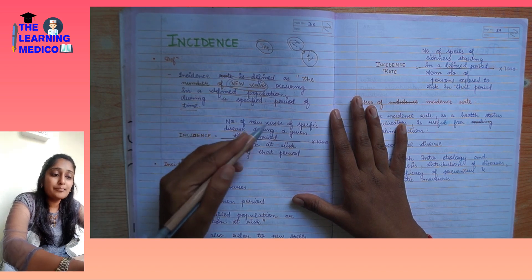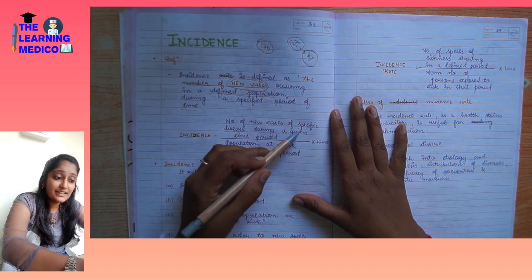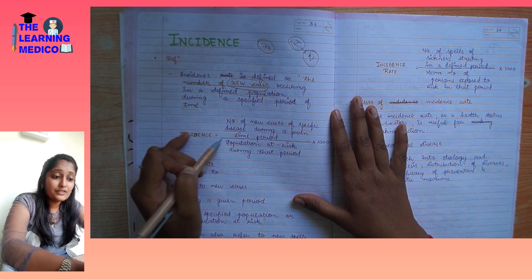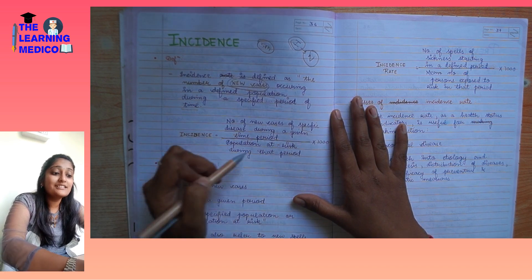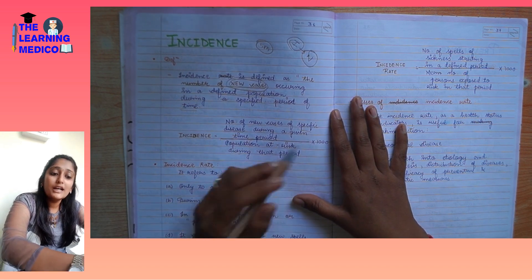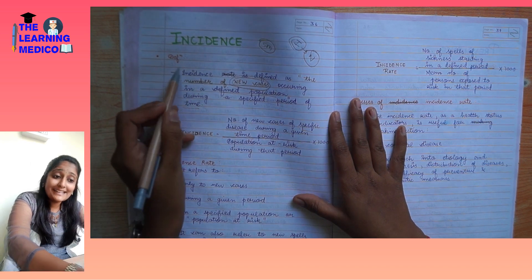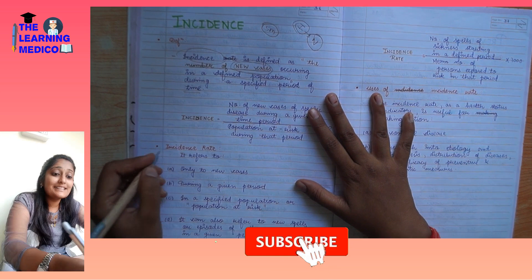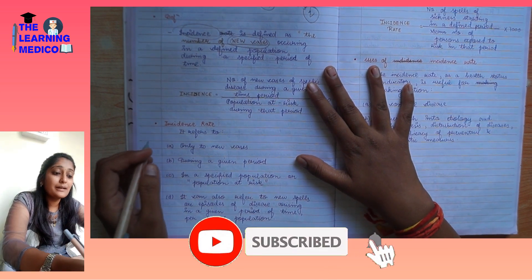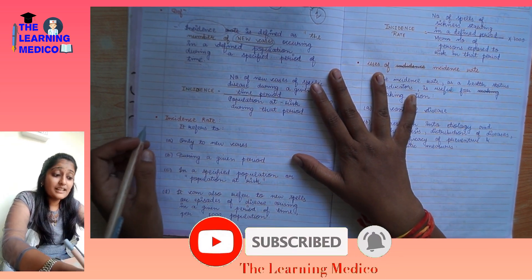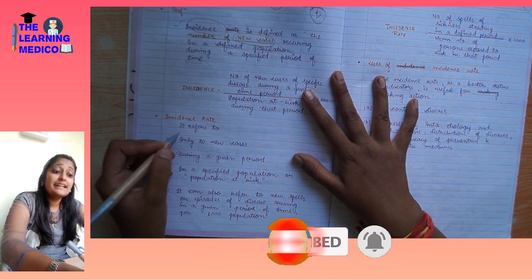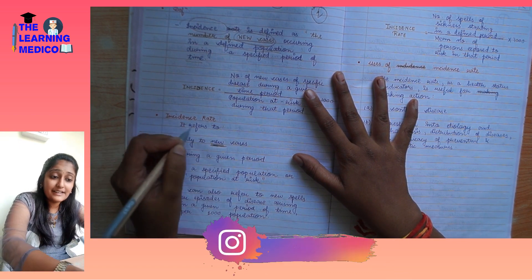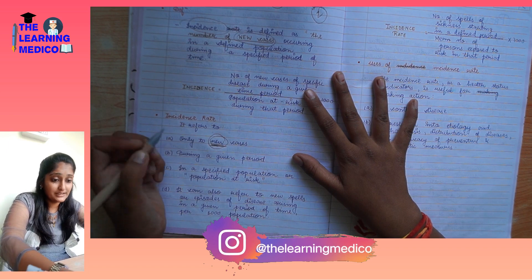How do we count the incidence? Number of new cases of a specific disease during a given period of time, upon population at risk during that period, into 1000. Incidence rate refers only to new cases.